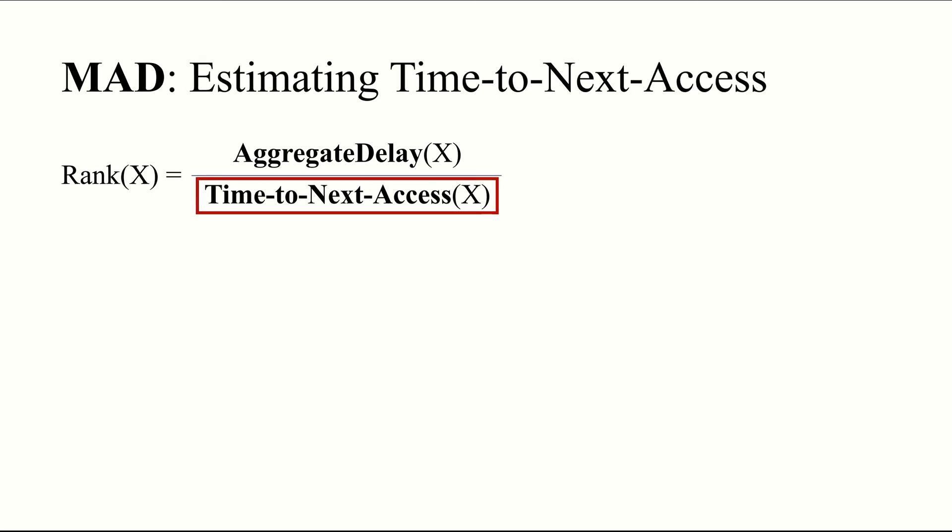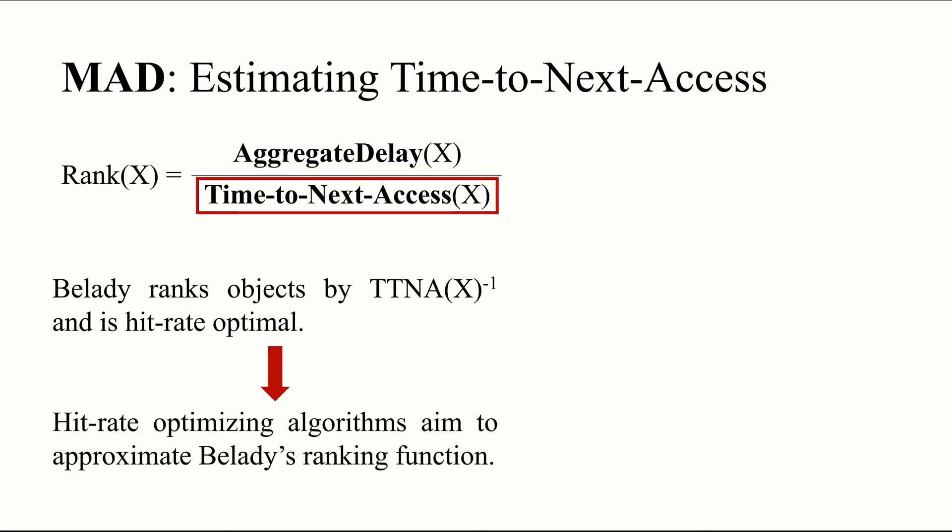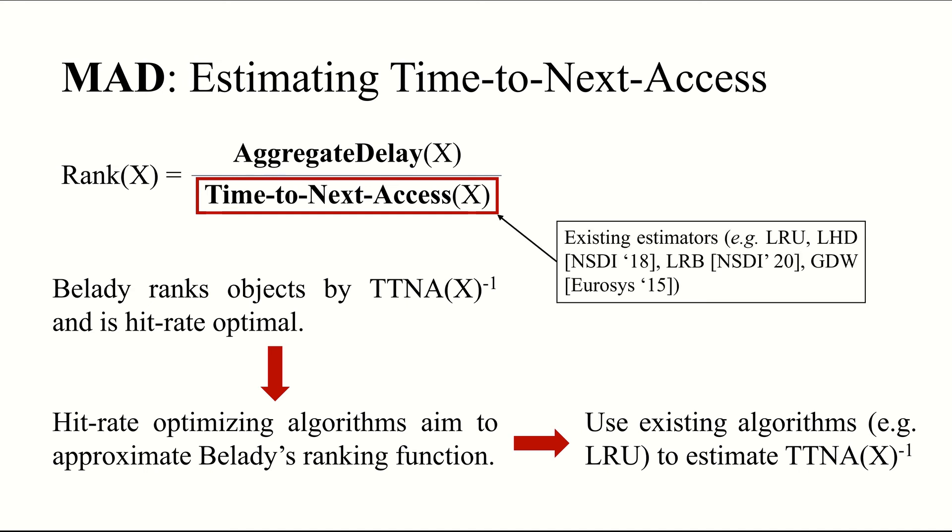We first consider the denominator, the time to next access. Recall that Belady chooses to evict objects that are used farthest in the future, which means that it ranks objects by 1 over the time to next access. We also know that Belady is hit rate optimal in the absence of delayed hits, which means that almost all hit rate optimizing algorithms aim to operate as close to Belady as possible. And the ranking function is an approximation of 1 over the time to next access. As a result, we can use these existing caching algorithms, such as LRU, LHD, LRB, or GD-Wheel, to name a few, as estimators of the denominator.